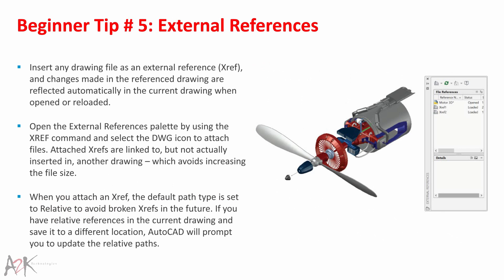Beginner Tip 5 – External References. Insert any drawing file as an external reference (Xref) and changes made in the reference drawing are reflected automatically in the current drawing when opened or reloaded. Open the External References palette using the Xref command and select the DWG icon to attach files. Attached Xrefs are linked to but not actually inserted in another drawing, which avoids increasing the file size. When you attach an Xref, the default path type is set to relative to avoid broken Xrefs. If you save the drawing to a different location, AutoCAD will prompt you to update the relative paths.